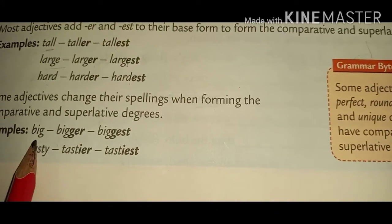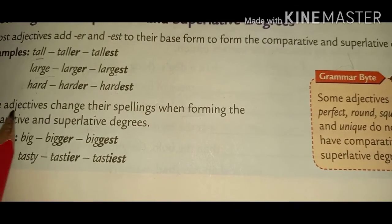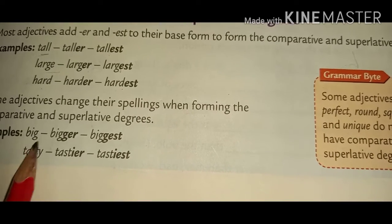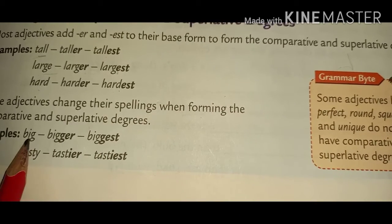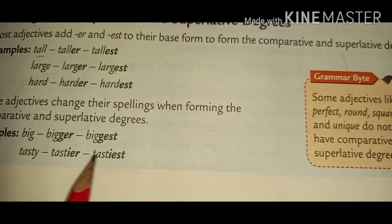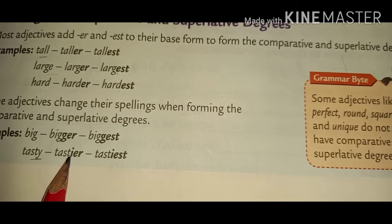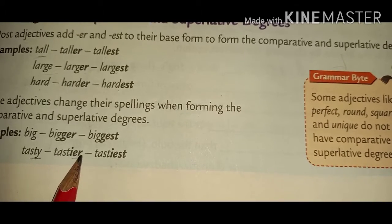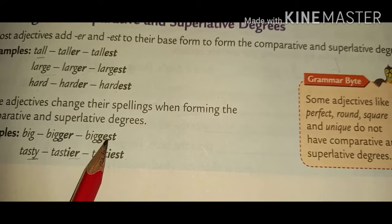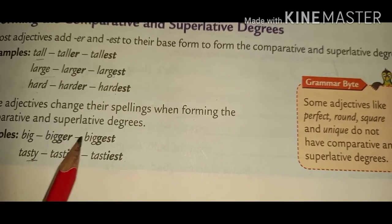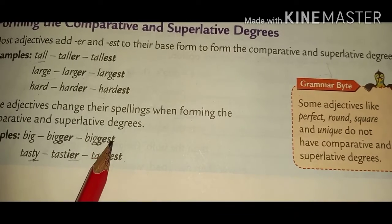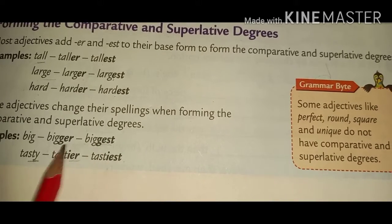There are some adjectives that change the spelling. In these words, the spellings are changed. You can see here: big, bigger, biggest; tasty, tastier, tastiest. With words ending in 'y', 'ier' and 'iest' are used. And in 'big', a double G is added — bigger, biggest.